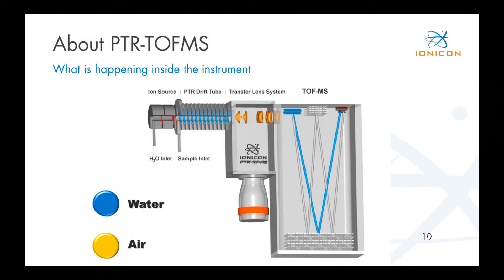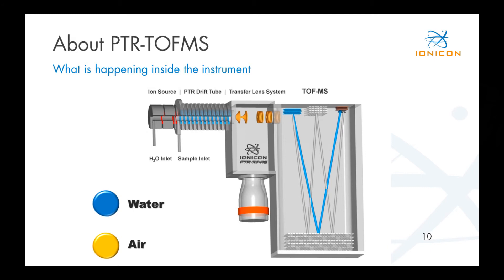Now that we are back from the lab, I want to give you some information about what's happening inside the instrument. In our instrument, at first we have an ion source — it's a hollow cathode ion source. This means you have a plasma burning inside and you have an inlet for water vapor. Down here there is a reservoir filled with liquid water that is constantly evaporated into the source. Because of the sophisticated design of the ion source, the H2O is very efficiently transferred into H3O+, meaning it gets an additional proton attached.